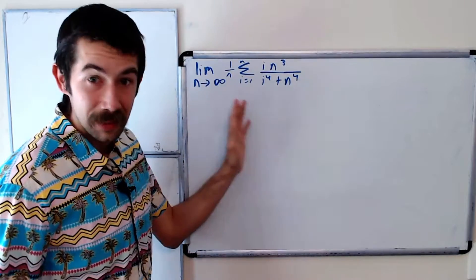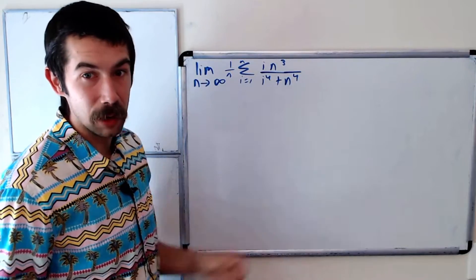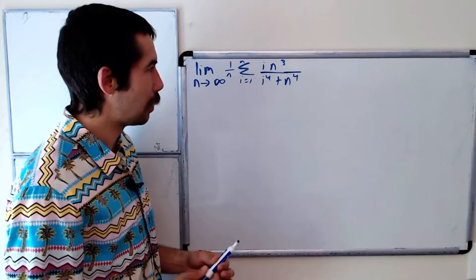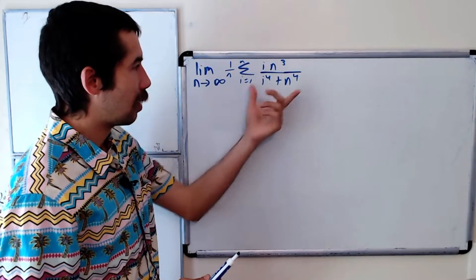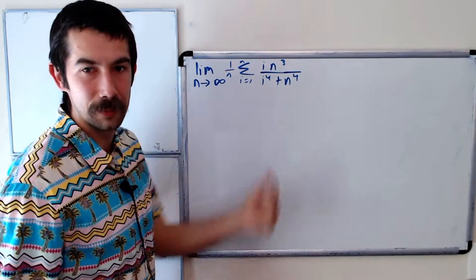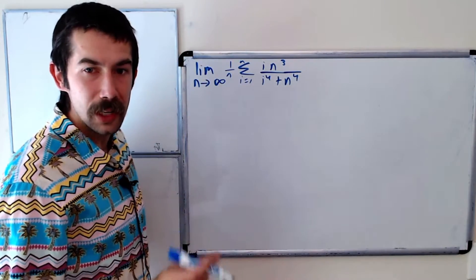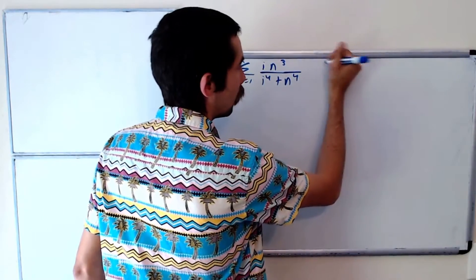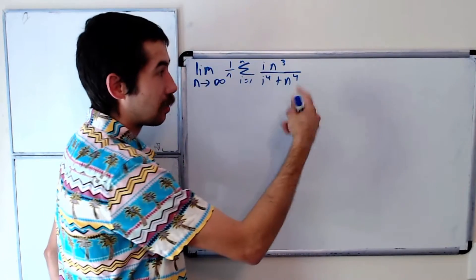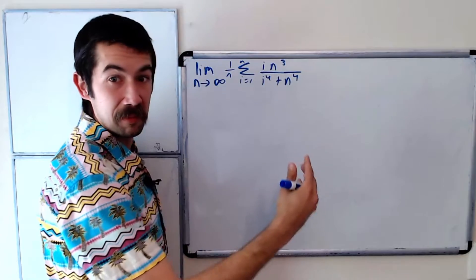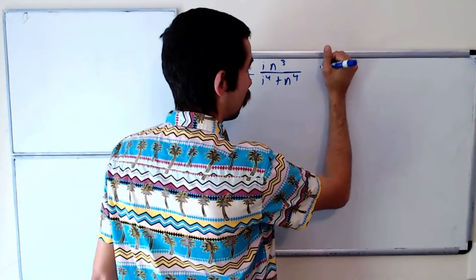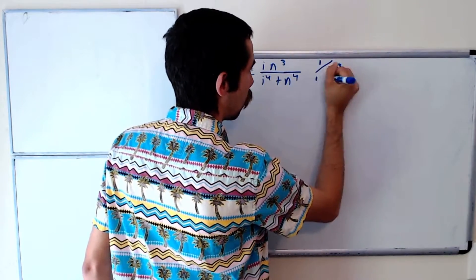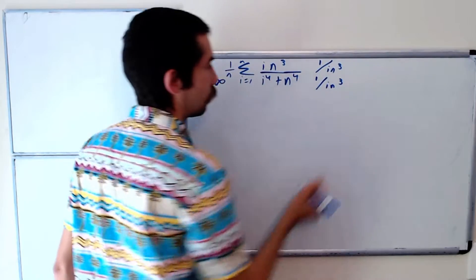This definitely looks like a Riemann sum since we have this factor of 1 over n outside of the sum. But we're not really sure how to deal with this, so let's multiply the numerator and denominator by (i·n³)⁻¹, that is, 1 over i·n³.